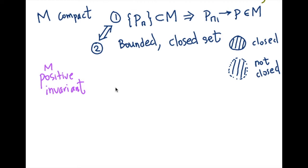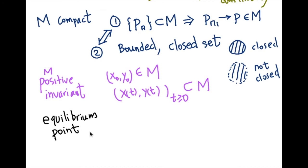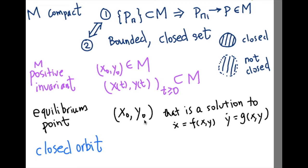Next I'll explain positive invariance: for any point in M, the solution starting at that point is contained in M. The theorem also requires no equilibrium point in M. An equilibrium point is a constant solution — a point that is also a solution, meaning as time goes on you stay at that point. When you plug that point into f and g, you get zero.